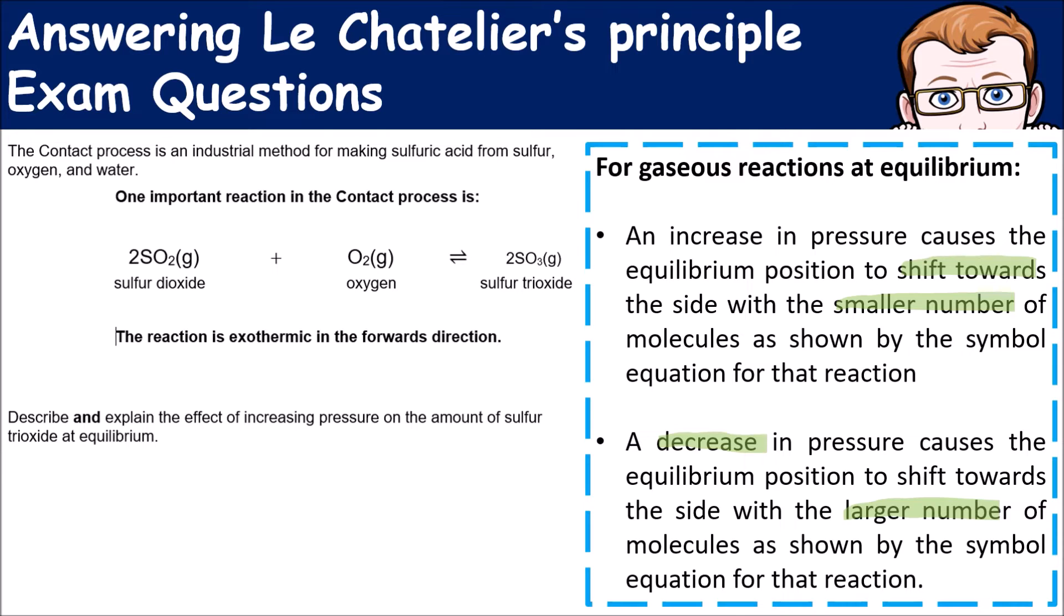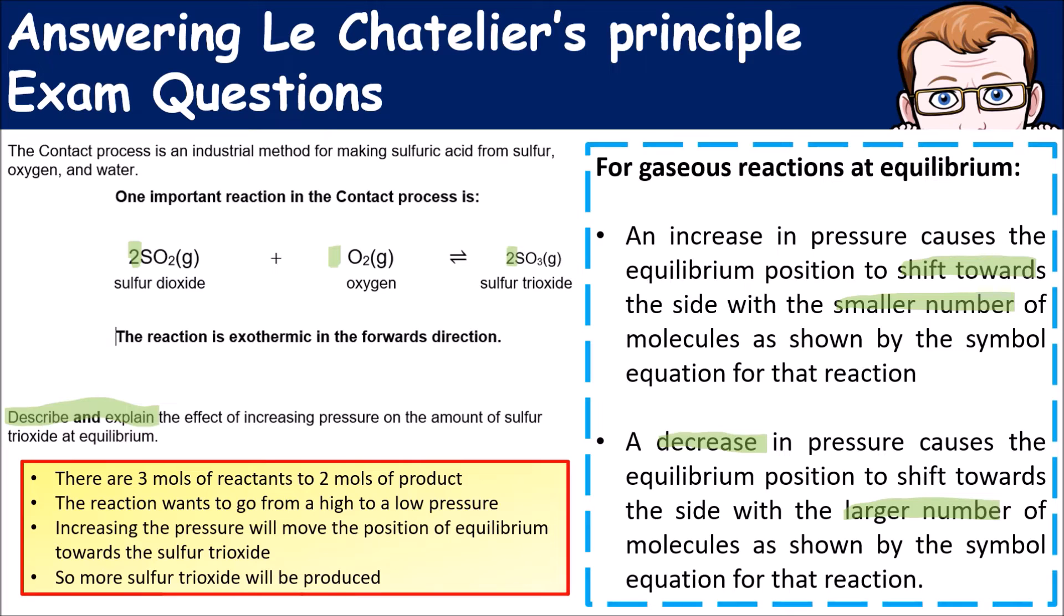If we go back and look at this, remember we've got one, two, three molecules of the reactants and two molecules of the products. To describe and explain the effect of increasing pressure on the amount of sulfur trioxide, key things you need to talk about is the fact that there's three moles of the reactants and two moles of products. We know we've got three lots of reactants against two lots of product. The reactants want to go from high to low pressure, so increasing the pressure will change the position of equilibrium. It shifts towards the sulfur trioxide, so therefore more sulfur trioxide will be made.